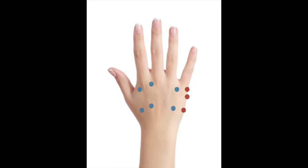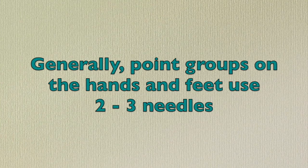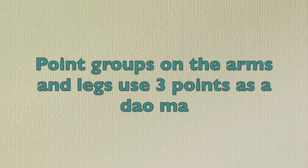When treating your clients, just start with three needles forming a dow maw. That might be a system one, two, or three connection. If the points are on the hands or feet, you can often use two points; on the legs, thighs, or arms, you'll want three points. Points on the hand and feet usually come in a pair of two, while on the arms, legs, and thighs we use three points in combination as a dow maw.